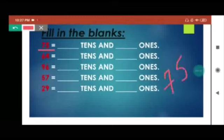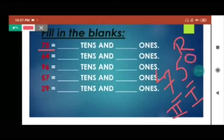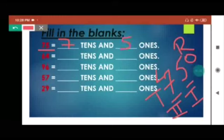I'm going to explain Question 1. Take 75 — it has two digits. Starting from right to left, this side is your right and this is your left. The first place is the ones place, and the second place is the tens place. In 75, the digit 5 is at the ones place, so its place value is 5 ones, or 5. The digit 7 is at the tens place, so its place value is 7 tens, or 70. The answers are: 7 tens and 5 ones; 6 tens and 4 ones; 9 tens and 6 ones; 5 tens and 7 ones; 2 tens and 9 ones.